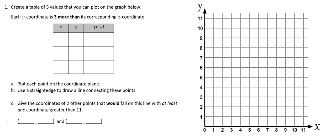The directions say to create a table of three values that you can plot on the graph. Each y-coordinate needs to be three more than its corresponding x-coordinate. So we need to come up with ordered pairs such that the second coordinate, the y-coordinate, is three more than the x-coordinate, and it has to fit on our graph.